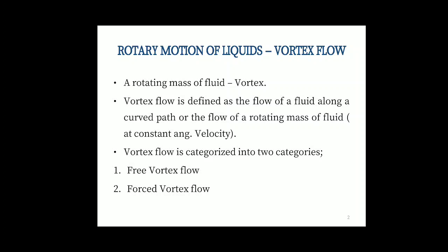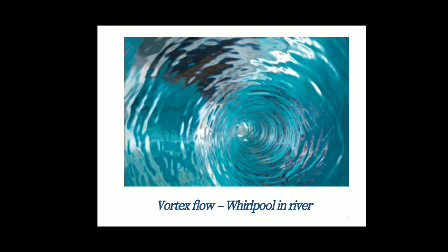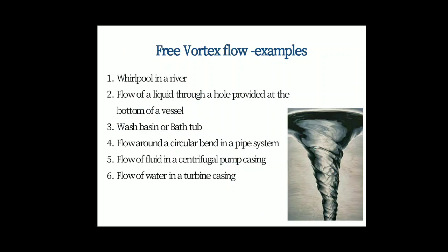Vortex flow is categorized into two categories: free vortex flow and forced vortex flow. The best examples are whirlpool in a river, flow of liquid through a hole provided at the bottom of a vessel, wash basin or bathtub, flow around a circular bend in a pipe system, flow of fluid in a centrifugal pump casing, and flow of water in a turbine casing.